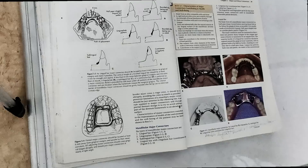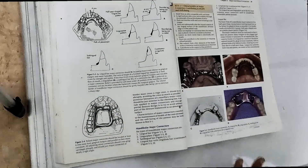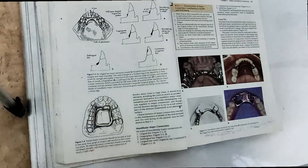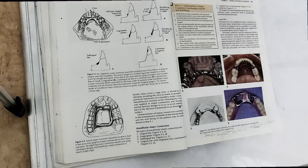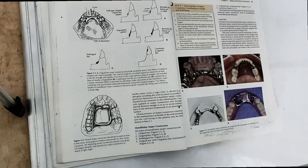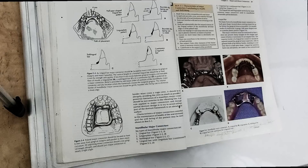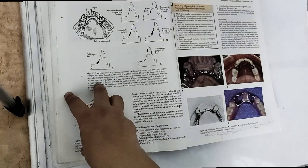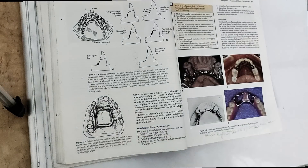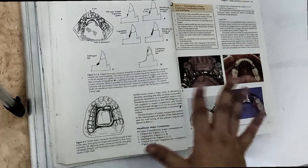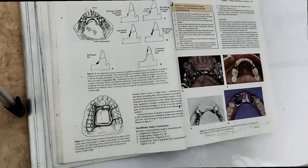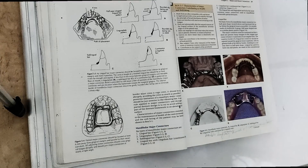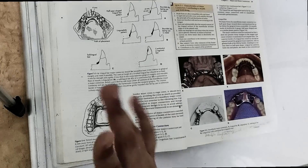I hope you are now clear on the mandibular major connectors, which is a difficult topic. We covered: lingual bar, lingual plate, sublingual bar, double lingual bar (Kennedy/continuous bar), and labial bar. If you enjoyed the video, give it a thumbs up and comment below. Next video we'll cover minor connectors and direct retainers. Take care, keep studying, keep learning, stay motivated — see you in the next video.